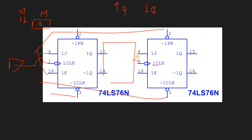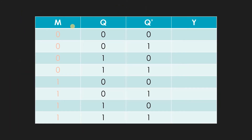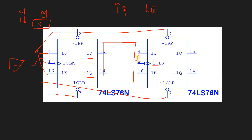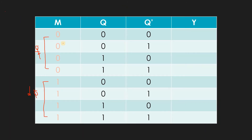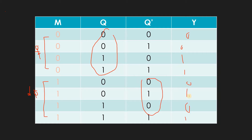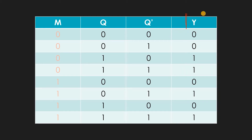We need to find Y, which will be connected to the clock. We have three values: Q, Q-bar, and mode m. For m equals zero we want an up counter, so Y should follow Q. For m equals one we want a down counter, so Y should follow Q-bar. We set up the truth table accordingly to derive the expression for Y.